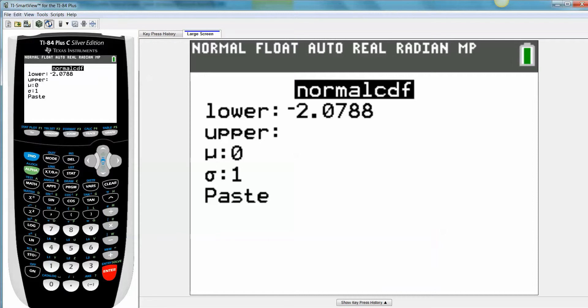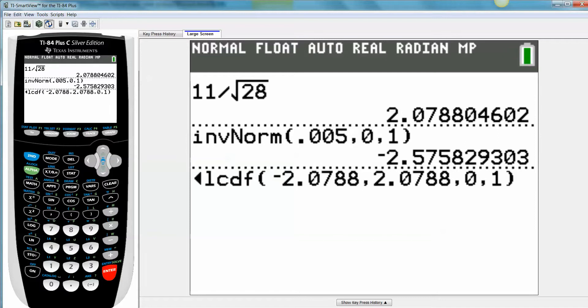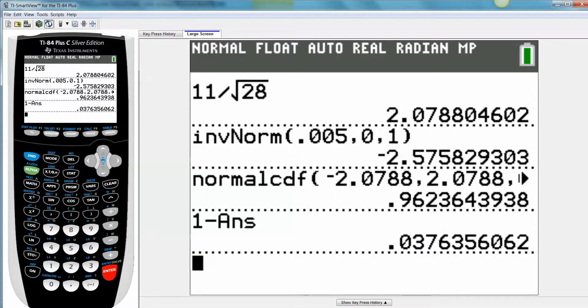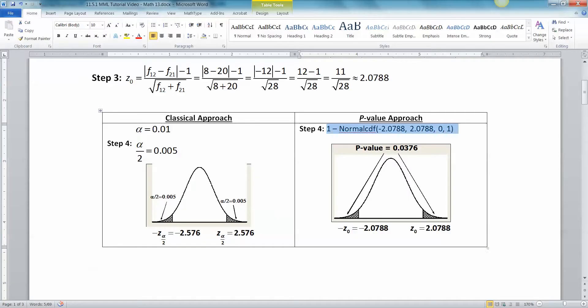But you're finding the area under normal curve just like then. So 2.0788, enter, enter, enter, enter, enter. And there you get 0.96236, then you take 1 minus that answer, and there you have 0.0376. So that's why I put the p-value right there as 0.0376.